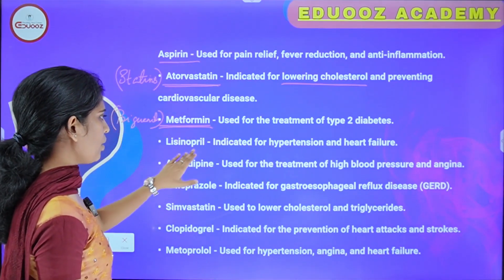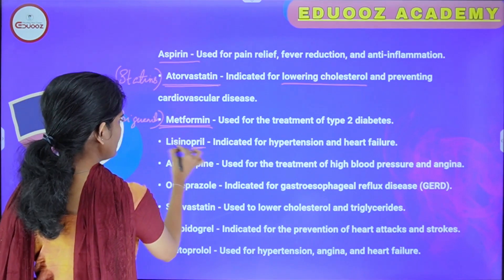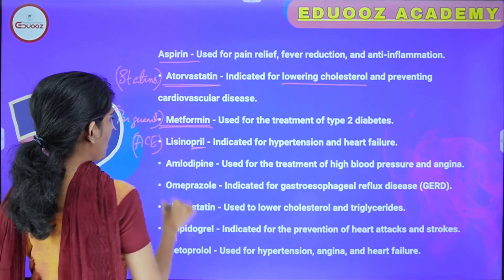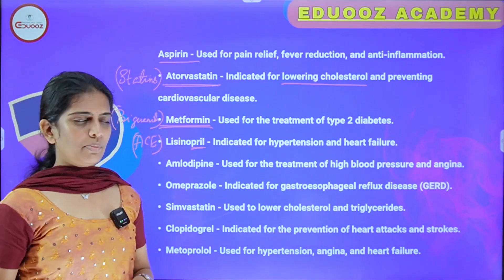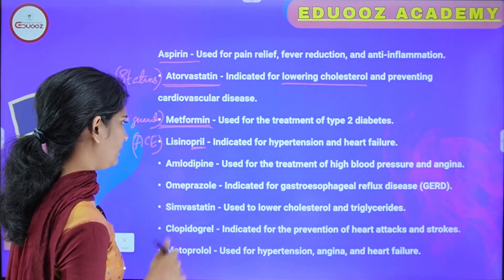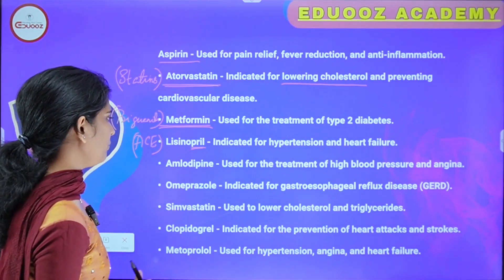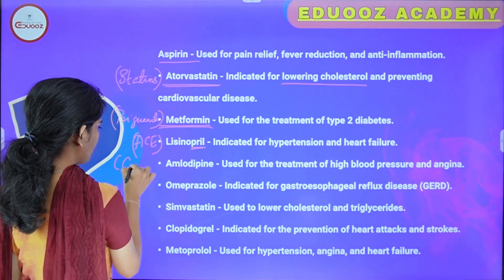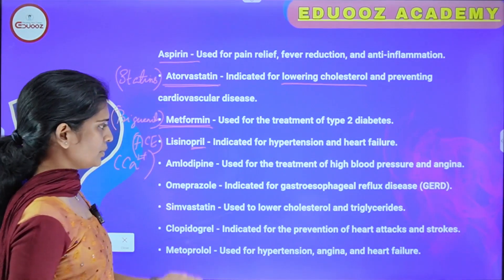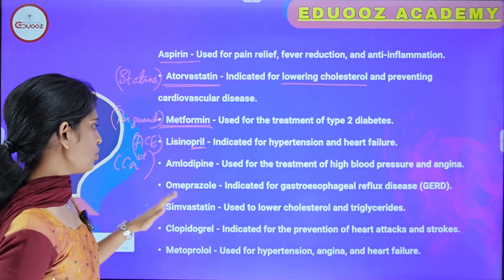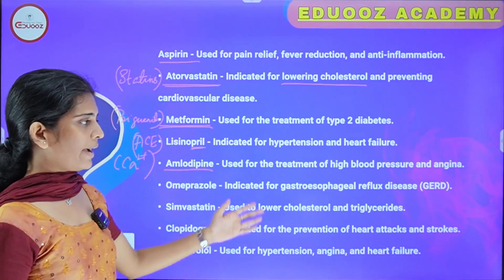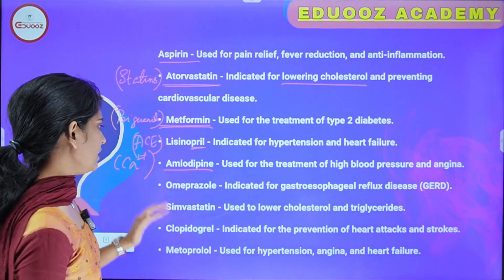Lisinopril is called an ACE inhibitor — angiotensin-converting enzyme inhibitor. It is indicated for hypertension and heart failure. Amlodipine is used for the treatment of high blood pressure and angina.